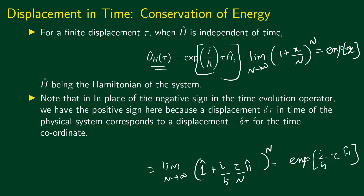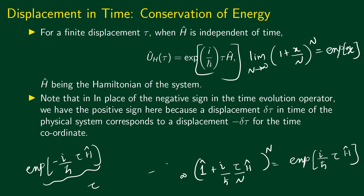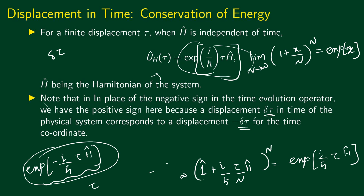Now, if you remember the time evolution operator from quantum dynamics, we had exponential minus i divided by h bar tau H hat — note the minus sign. The reason is that the time evolution operator corresponded to a change tau in the time coordinate, which is the passive viewpoint, whereas here we are translating the physical system by an amount tau in time, which is the active viewpoint. A displacement delta tau of the physical system corresponds to a displacement of minus delta tau for the time coordinate.